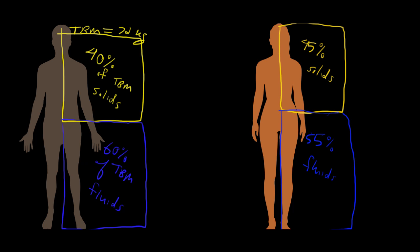Now we can break this down even further. The fluids can be broken down further: 40% of total body mass is intracellular fluid. It's inside your cells, the cytoplasm.